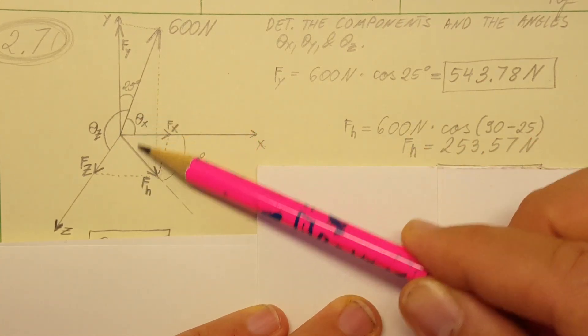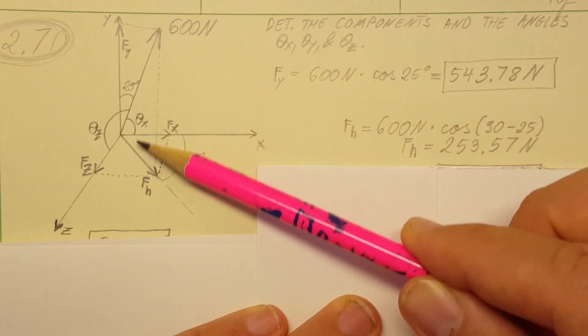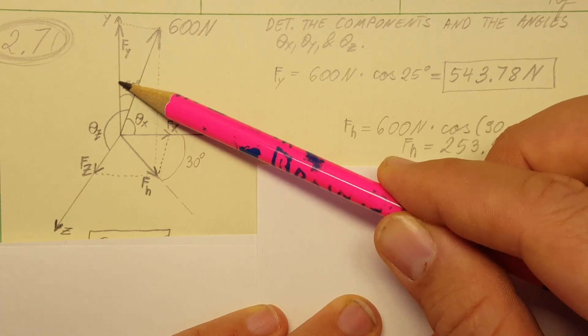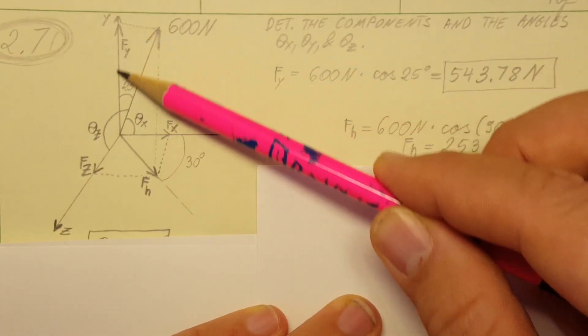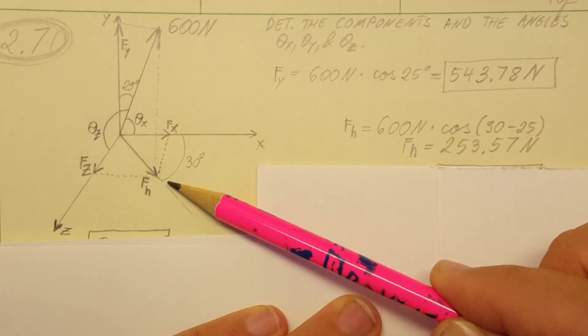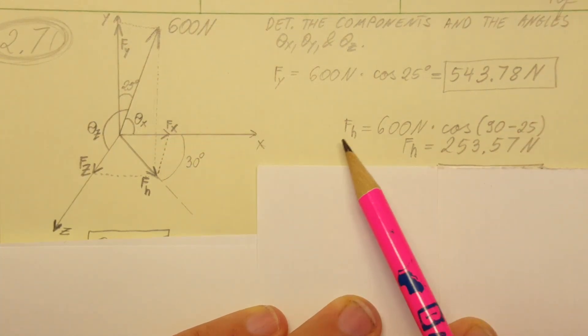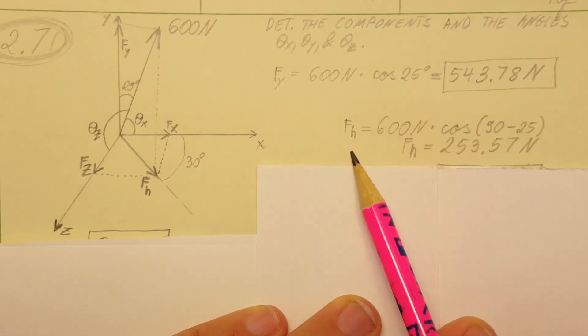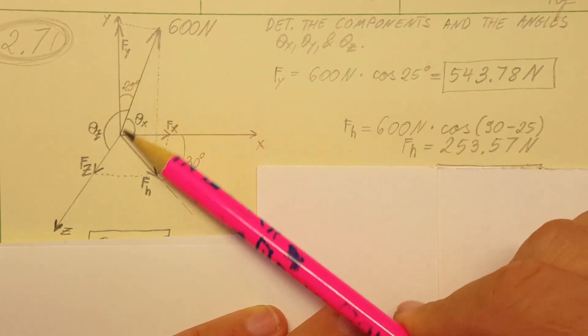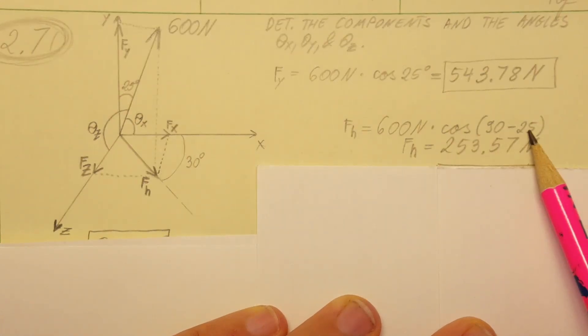For fh we're going to use this triangle, and we're going to use this angle coming from f down to fh. For that, this angle we're going to calculate from this vertical line to this horizontal line, so 90 degrees minus 25. So fh equals 600 times cosine of 90 minus 25.